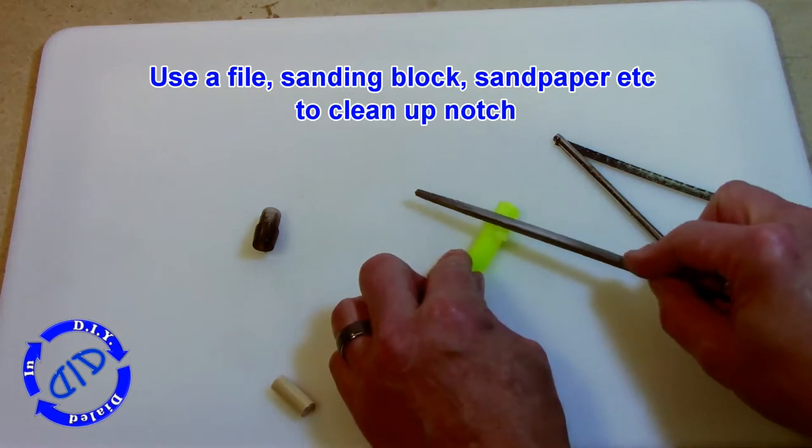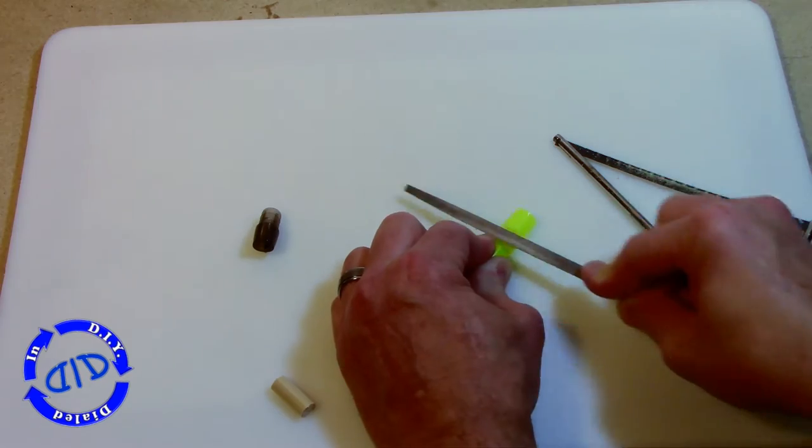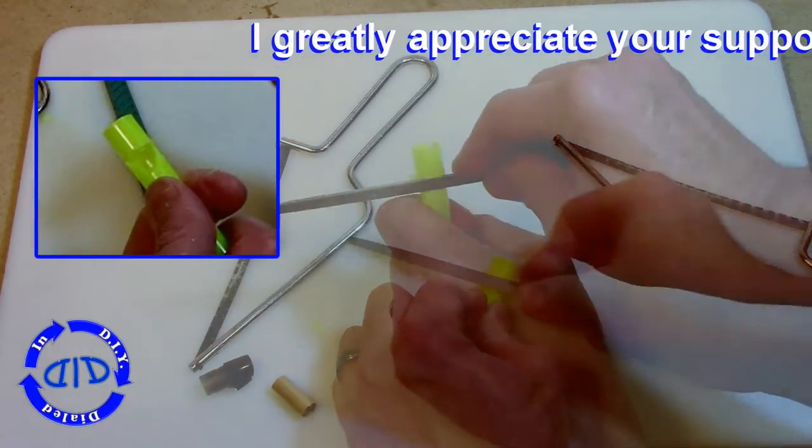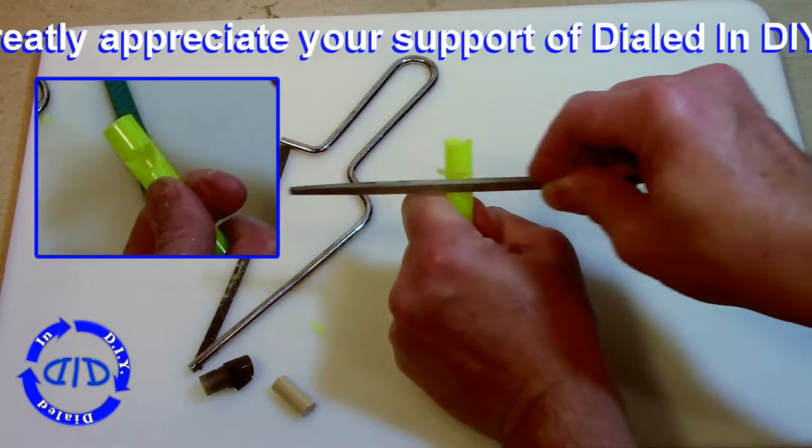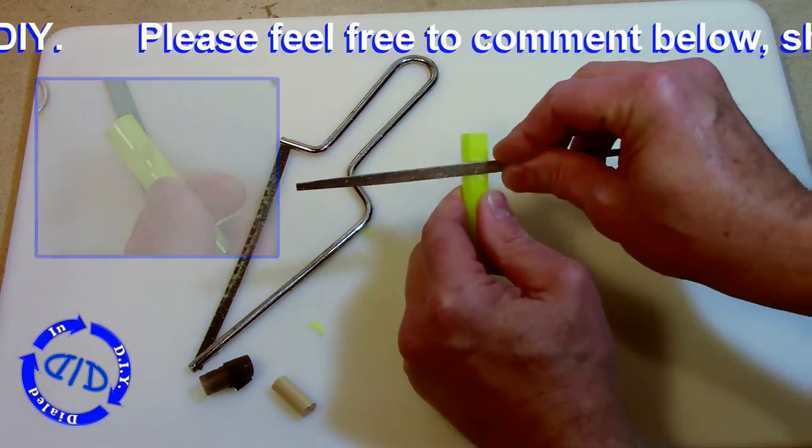Once we have this rough notch cut out, we're gonna go back with either a file, a sanding block, sandpaper, or something, and clean this notch up. We want it to look like it does in the upper inset picture in the left-hand corner. Once you have it cleaned up, it's gonna look a little bit like an upside-down triangle except that bottom piece or the bottom point on that triangle is gonna be a little bit rounded.